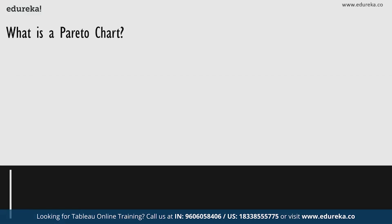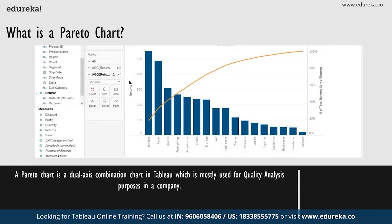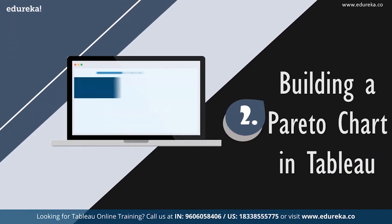So what is a Pareto chart? A Pareto chart is basically a dual axis combination chart in Tableau. On its primary axis, bars are used to show basic raw quantities for each dimension, usually sorted in descending order. On a secondary axis, a line graph is used to show the cumulative total in a running percentage format. This chart is most known for being part of the seven basic tools of quality control, and is traditionally used to identify the biggest opportunities for improvement.